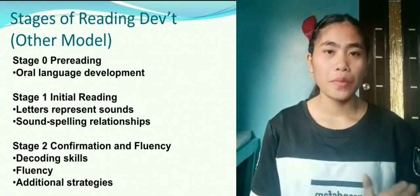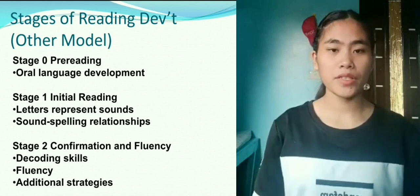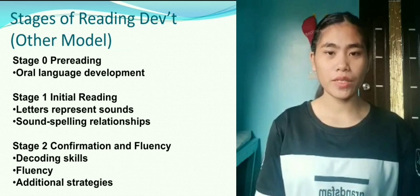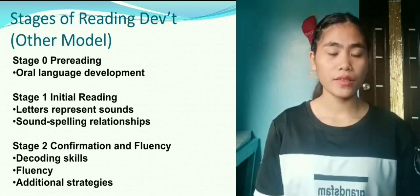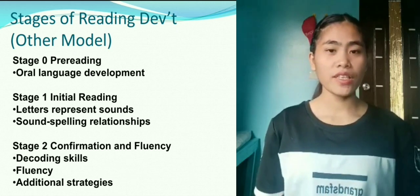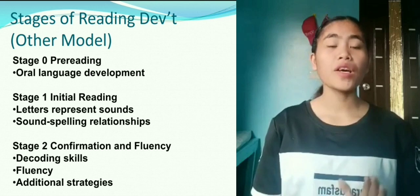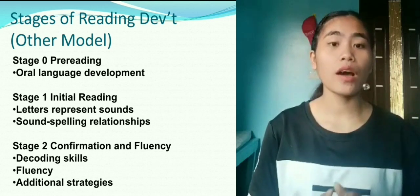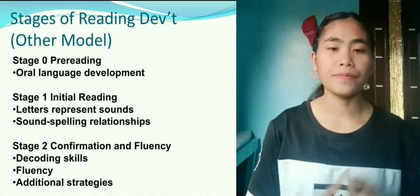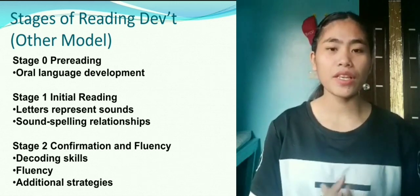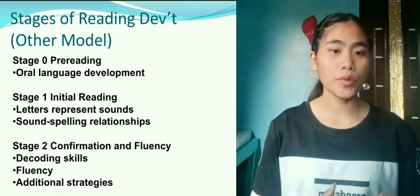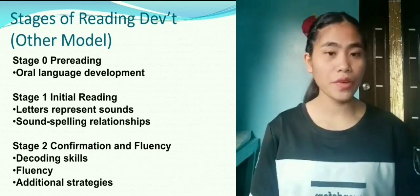My assigned topic is the other model of stages of reading development. The first is Stage 0, or pre-reading. In this stage, children arrive at the pre-reading stage when adults begin to read stories to them and they begin to listen. The pre-reading stage can actually begin in infancy and will last until a child begins to actively learn to read, usually for the first four years of their lives.